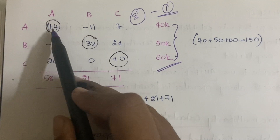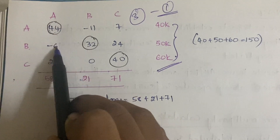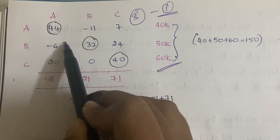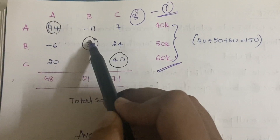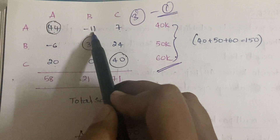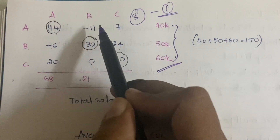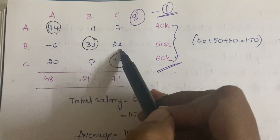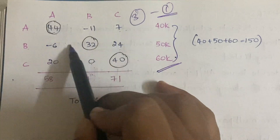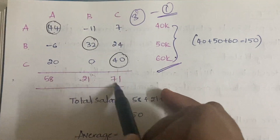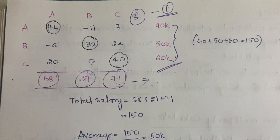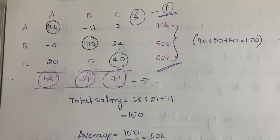For example: A keeps 44, receives -6 from B and 20 from C, and adds them: 44 + 20 - 6 = 58. B keeps 32, receives -11 from A and 0 from C, and adds them: 32 - 11 + 0 = 21. C keeps 40, receives 7 from A and 24 from B, and adds them: 40 + 7 + 24 = 71. These local sums are then revealed publicly.